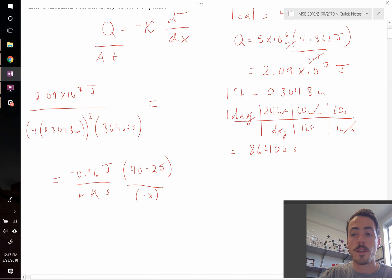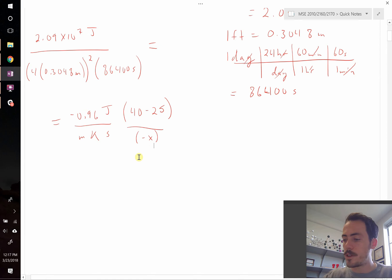Since we're saying that heat is flowing down the temperature gradient, that's why we have the negative sign in front of the thermal conductivity here, and that's why you end up with a negative x here for the thickness. So when we go ahead and simplify things, the left hand side of our equation simplifies down to 163 joules per meter squared per second.